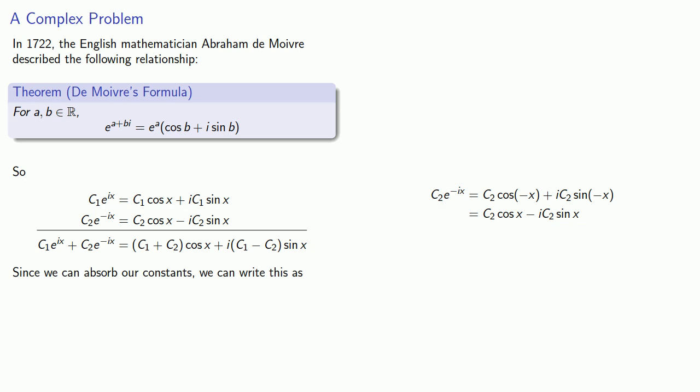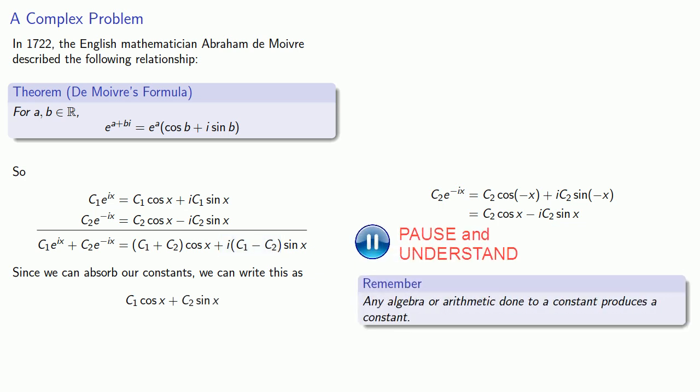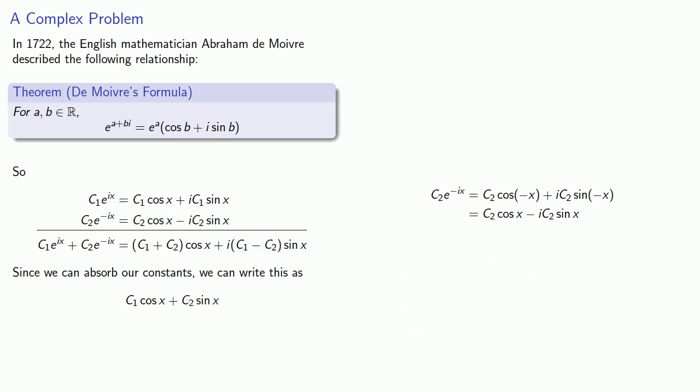Since we can absorb our constants, we can write this as follows. This c₁ + c₂, well, that's just a constant, so we'll call it c₁. And i times (c₁ - c₂), well, that's really just another constant, and we'll call that c₂. And so this is the general solution to the differential equation y'' + y = 0.